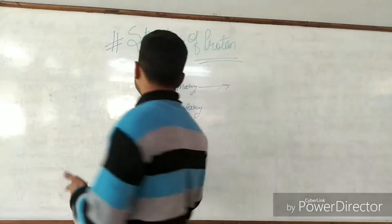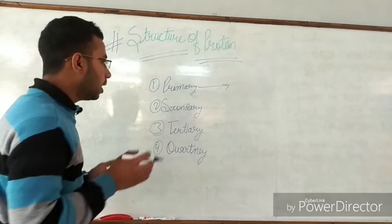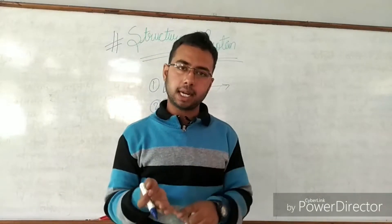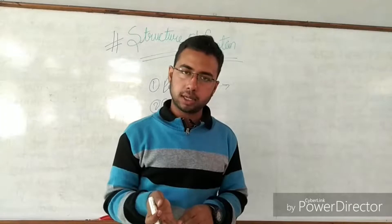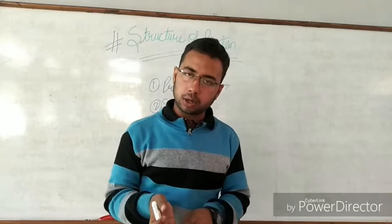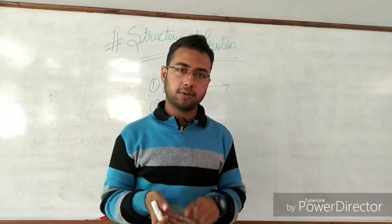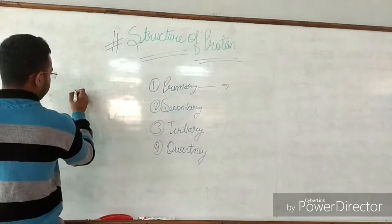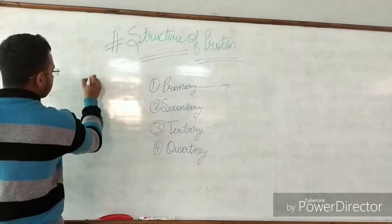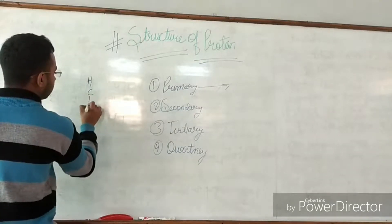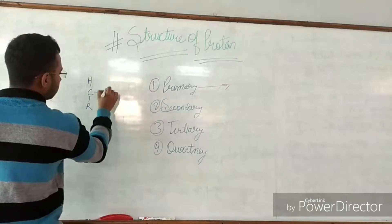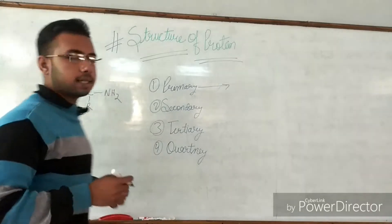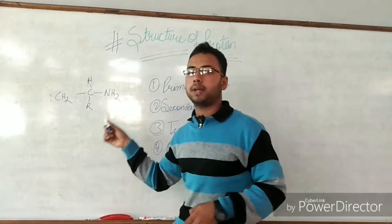Before knowing the structures, we just have to know what is an amino acid and what is the formula of an amino acid. An amino acid is a molecule which contains an amino group, a carboxyl group, and an R group. These three things are most necessary for an amino acid.